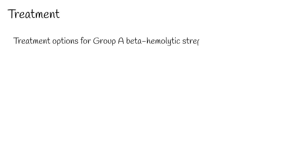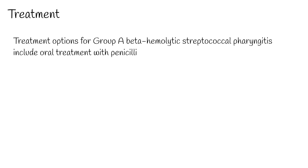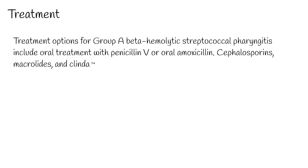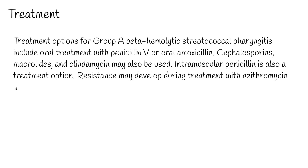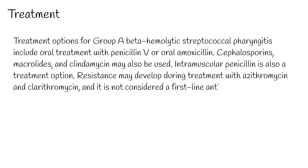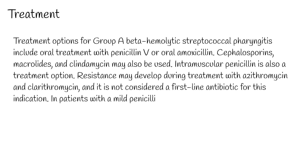Antibiotics for pharyngitis are usually used for patients with group A beta-hemolytic streptococcal pharyngitis, and should only be given to confirmed positive patients, particularly children. Treatment options include oral penicillin V or oral amoxicillin. Cephalosporins, macrolides, and clindamycin may also be used. Intramuscular penicillin is also a treatment option. Resistance may develop during treatment with azithromycin and clarithromycin, and these are not considered first-line antibiotics. In patients with a mild penicillin allergy, cephalosporins can be used.